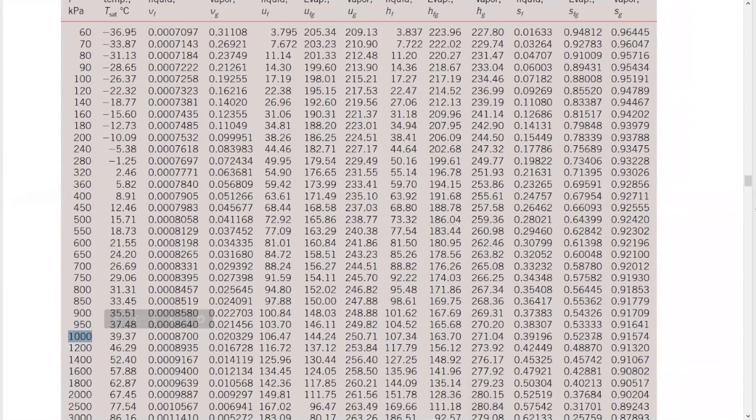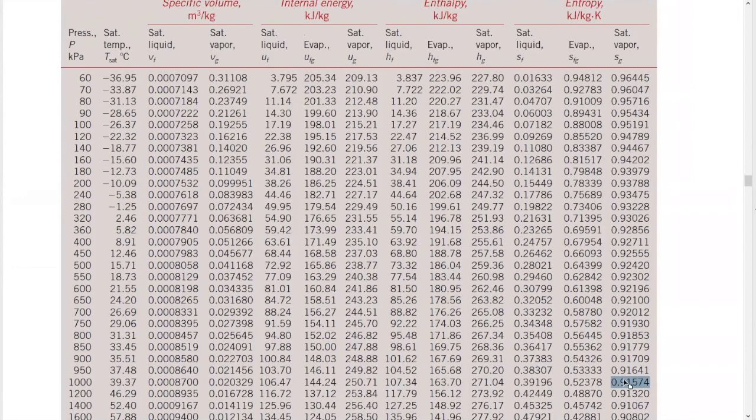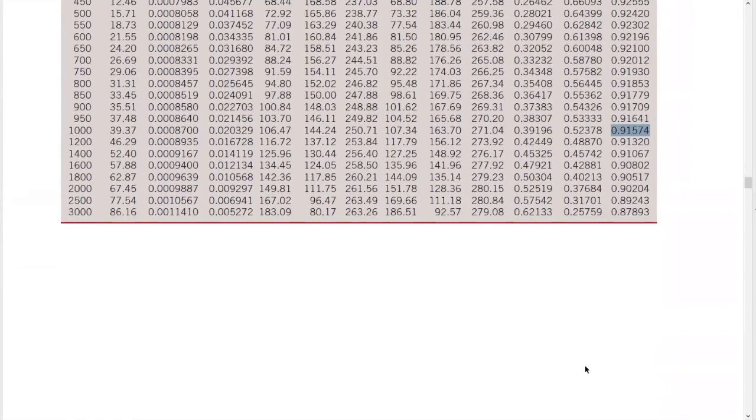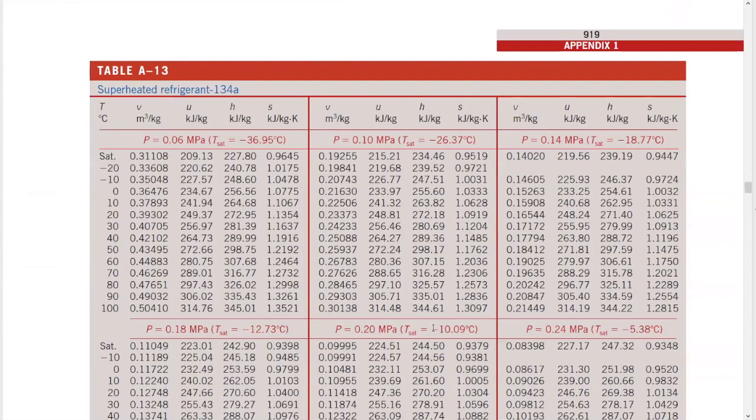And our entropy is 0.92 something, right? So our entropy is greater than the entropy of the saturated vapor. So we know this guy is superheated. If you look at the drawing on the T-S diagram, you would know that already. But we always have to make sure before we do wrong assumptions. So this is indeed superheated. So we're going to be looking at A13.